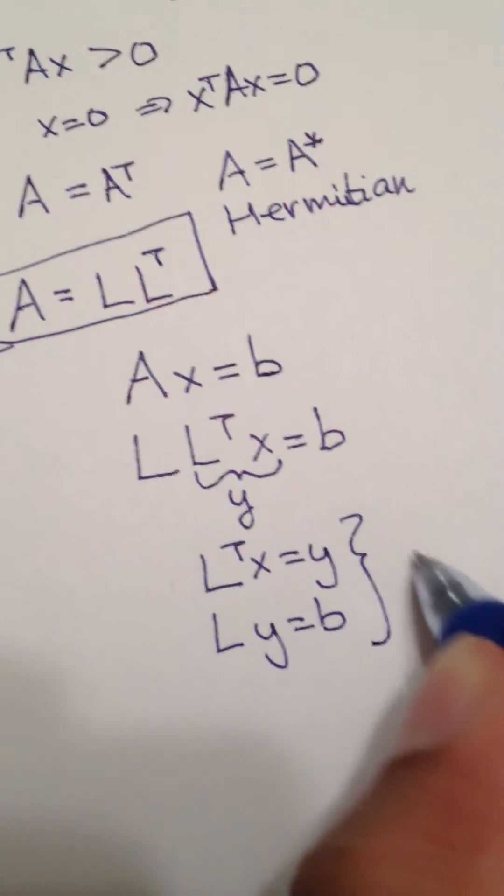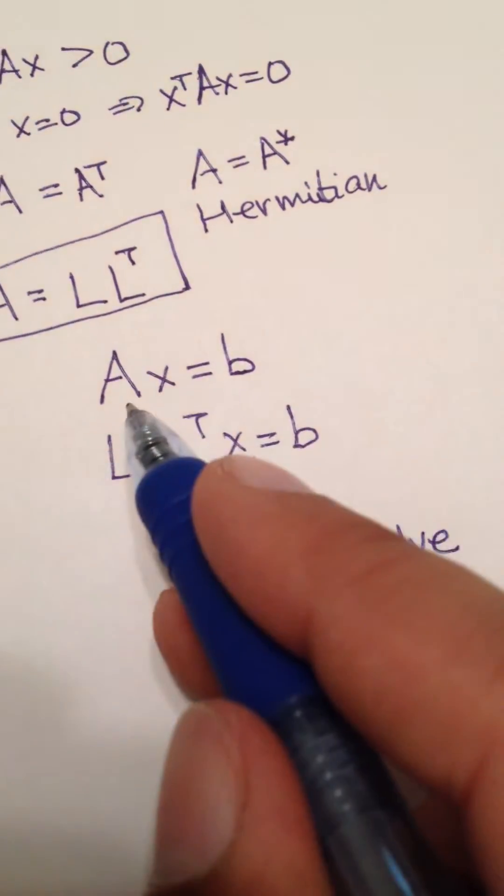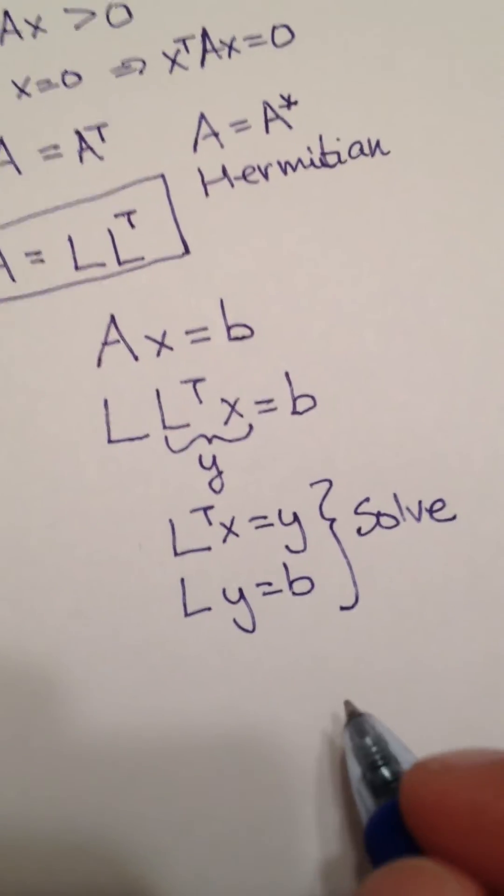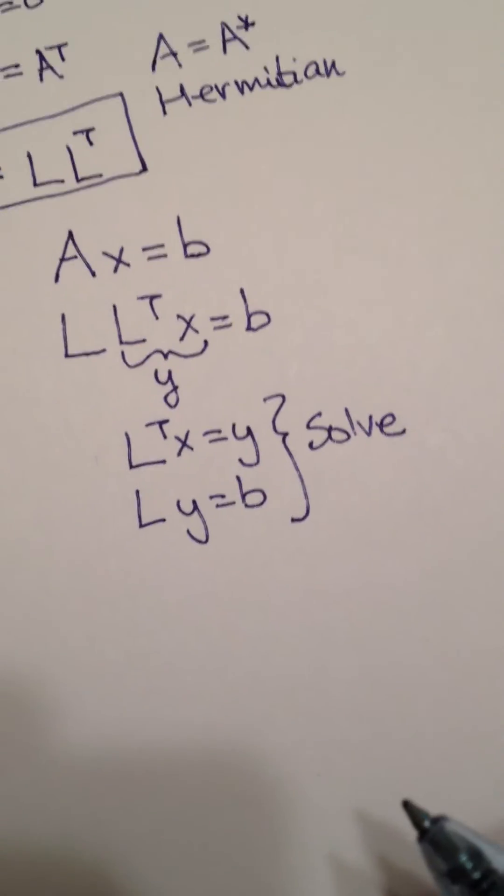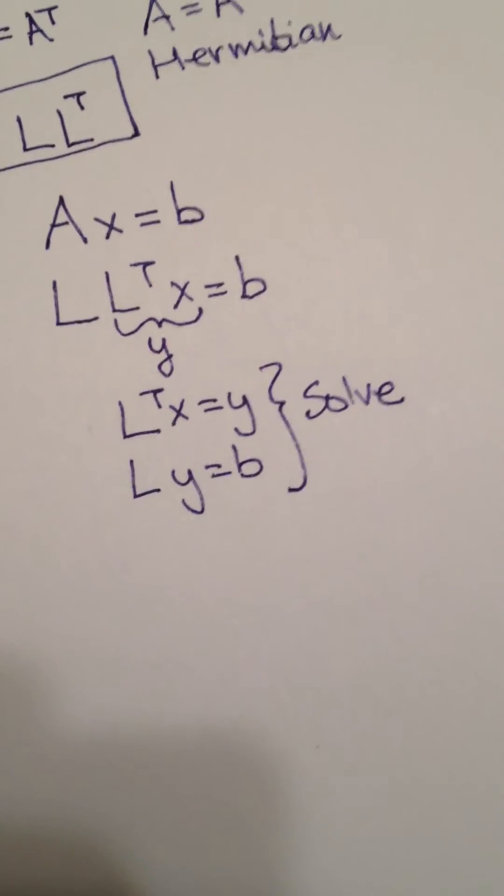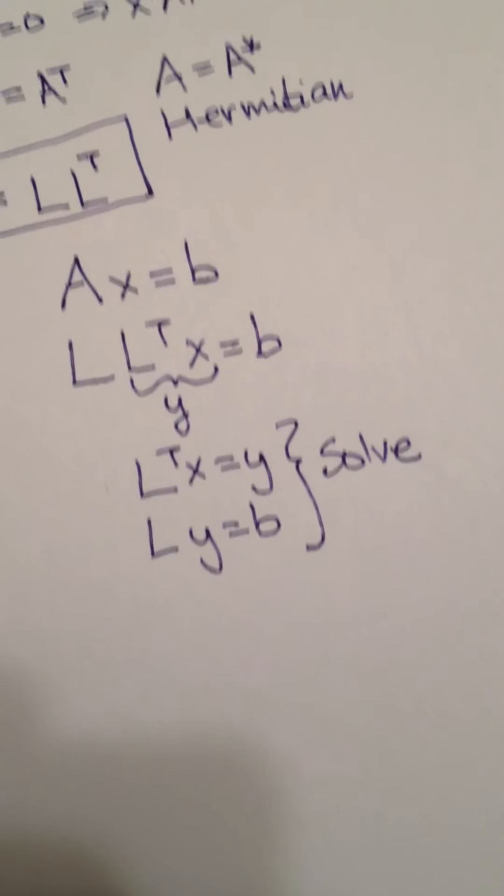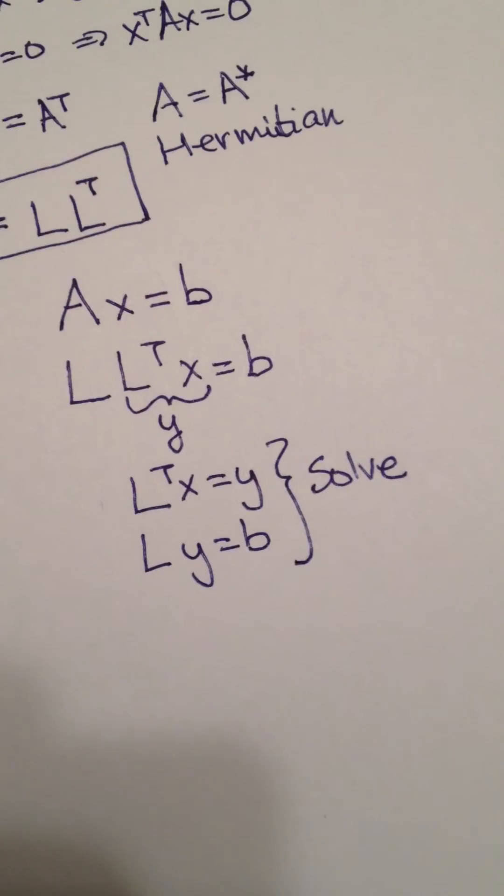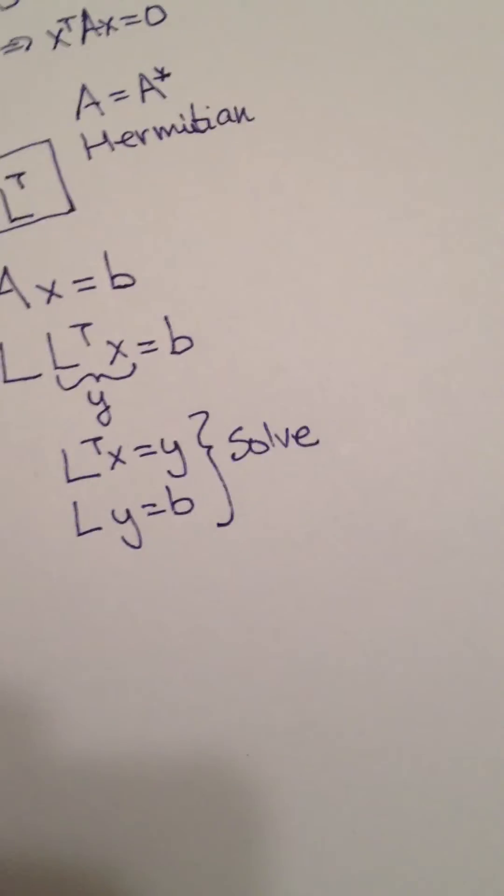So if you solve this, then you can solve A X equals B. So this is one way of using Cholesky. You can also use Cholesky in other problems, such as Kalman filters and Monte Carlo simulations. But I'll leave it at that. Now, how exactly does it work?